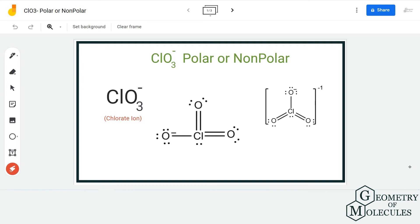Hi guys, welcome back to our channel. In today's video we are going to help you determine if ClO3 minus is a polar or non-polar molecule. To find that out, we are first going to look at its Lewis structure.